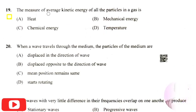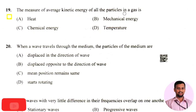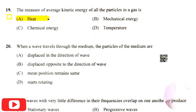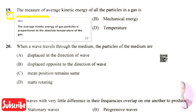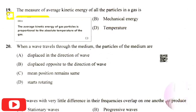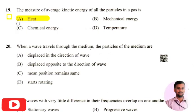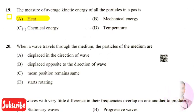The next question: the measure of average kinetic energy of all particles in a gas is — the right answer is option 1, that is heat. The average kinetic energy of gas particles is proportional to the absolute temperature of the gas. By measuring heat, we obtain the average kinetic energy of all gas particles.